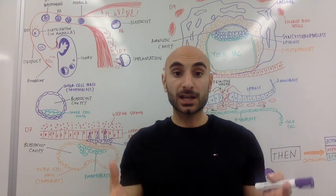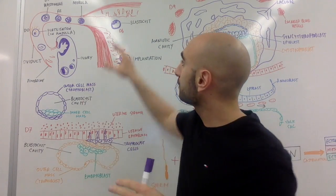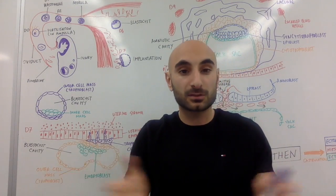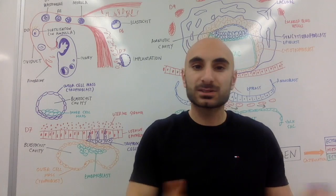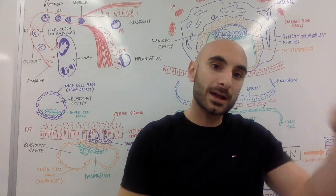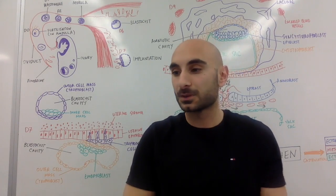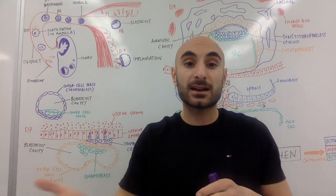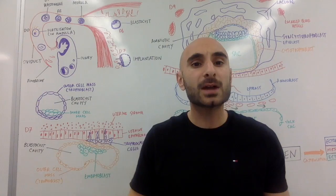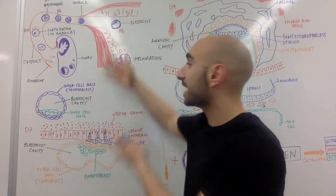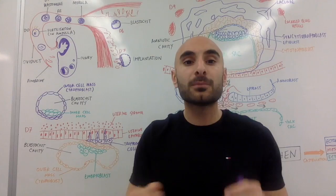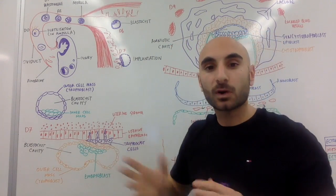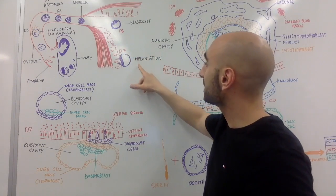One thing to keep in mind is that all of these days will be different in every textbook you get, because there are individual differences — one embryo might undergo implantation on a different day than another. So when you're looking at textbooks and at the days I've put up here, it's going to be different, but it's all normal. On day seven, we have implantation.